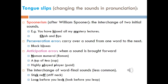Perseveration error is when you carry over a sound from one word to the next — for example, 'black blocks' instead of 'black books.' Or anticipation error, when a sound is brought forward — for example, 'Noman numeral' instead of 'Roman numeral.' You could go over more examples.